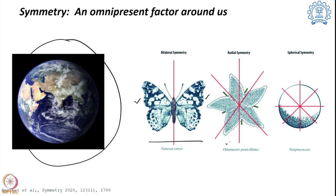We also see this particular sea creature where different portions of its body are actually symmetric. If we go around these lines, we see a symmetric arrangement — this is called radial symmetry. And lastly, we also have spherical symmetry. This bacterium shown here looks spherical in nature and is also concentric from its center, so we call it spherical symmetry.